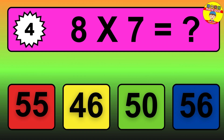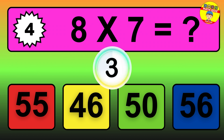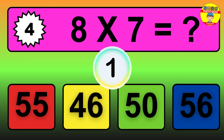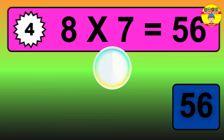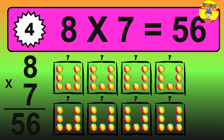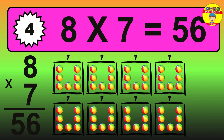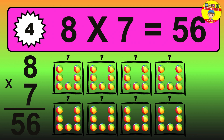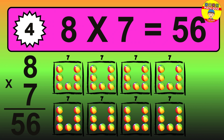Question 4. 8 times 7 equals what? The answer is 8 times 7 is 56. To calculate, we have 8 groups with 7 balls each one. So, how many balls do we have? 56 balls.